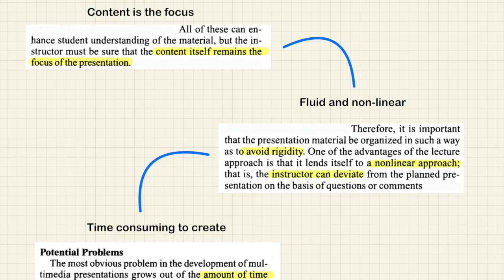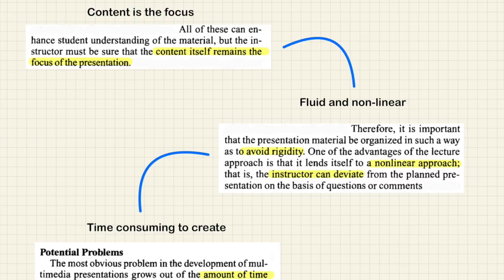The other very important mention Gottschik made in his paper was that content should be the focus of your PowerPoint — not the fancy transitions, animations, colors, or bullet points that bounce around. Content is more important. All of these features can enhance student understanding, but the instructor must be sure that the content itself remains the focus. I have seen so many PowerPoints that were pretty bad but had amazing features and gimmicks — that's not useful because the purpose of a PowerPoint is to get the message across to students in the most effective way.